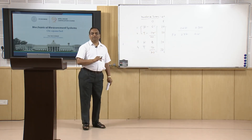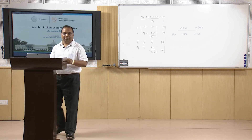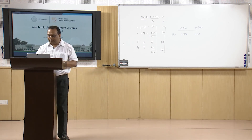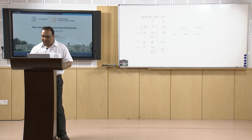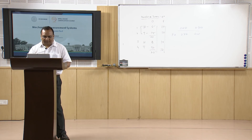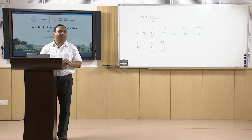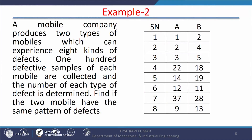This chi-square test is very important for those conducting experiments or doing experimental data analysis. Now let us take another example — a mobile company example. A mobile company produces two types of mobiles which can experience eight kinds of defects.